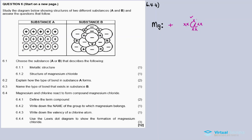To balance the loss and gain: magnesium loses 2 electrons, so we need 2 chlorine atoms, each gaining 1 electron. So magnesium becomes Mg²⁺ (plus two charge, having lost two electrons), and each chlorine becomes Cl⁻ with one extra electron coming from magnesium. This is the Lewis dot diagram showing the formation of magnesium chloride, MgCl₂.